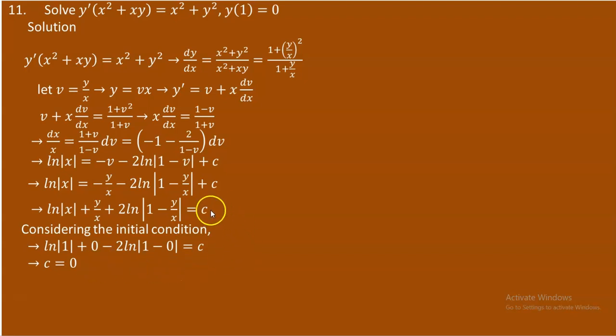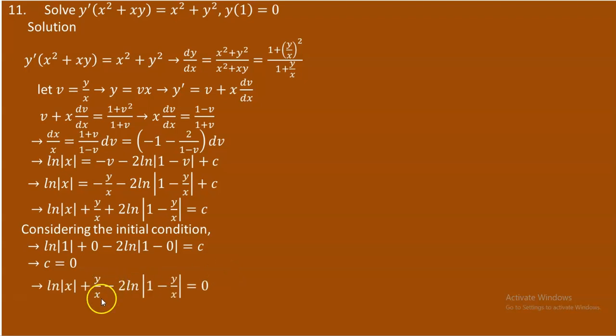Substituting C = 0 gives the particular solution: ln x + y/x + 2 ln(1 − y/x) = 0. This can also be expressed in another form if desired.